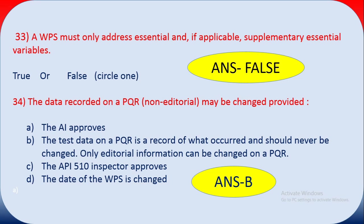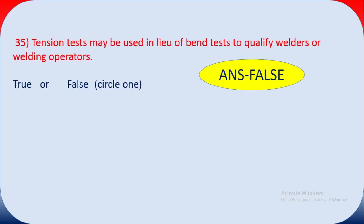Question thirty-five: a tension test may be used in lieu of a bend test to qualify a welder or welding operator — true or false? The answer is false.